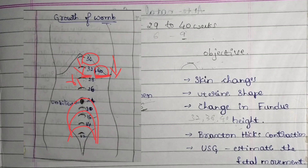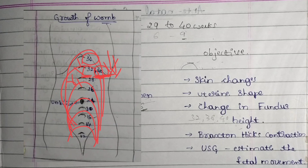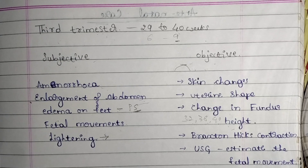At the 40th week — the last week of pregnancy when delivery occurs — lightening takes place. Lightening is the engagement of the baby's head, where the baby moves downwards towards the birth canal and gets prepared for the delivery process. This is why the fundus height actually decreases at 40 weeks. Braxton Hicks contractions are irregular, painless contractions also observed during this period.